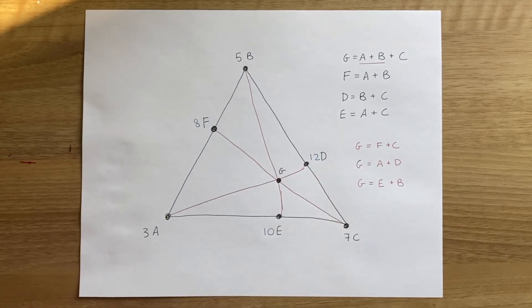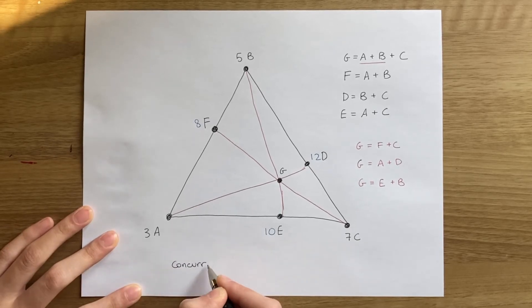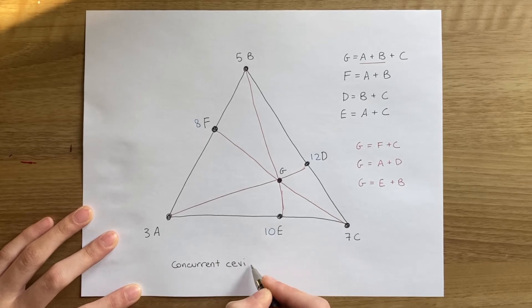A key bit of vocab, a cevian is the segment from one vertex of a triangle to a point on the opposite side. Since these three cevians all intersect in one point, G, we call them concurrent cevians.